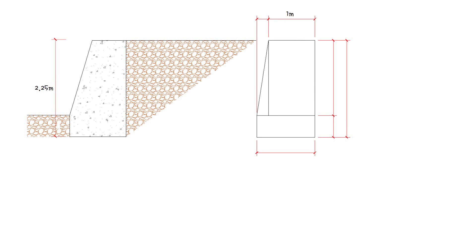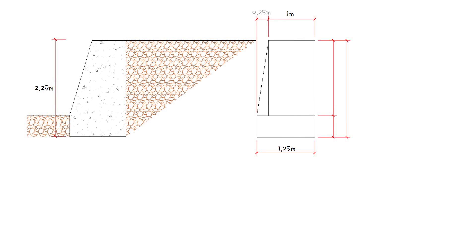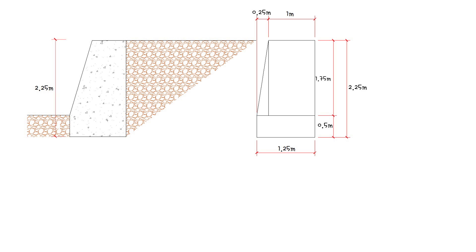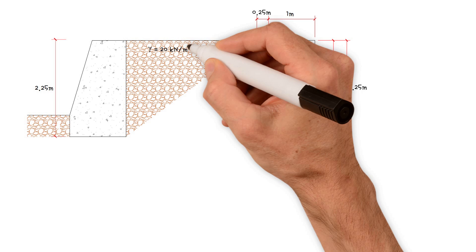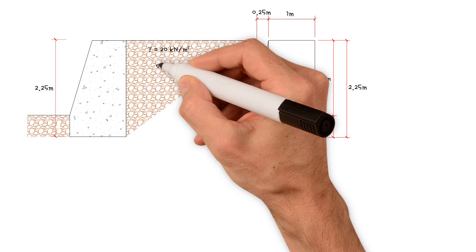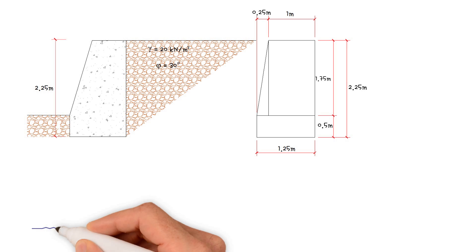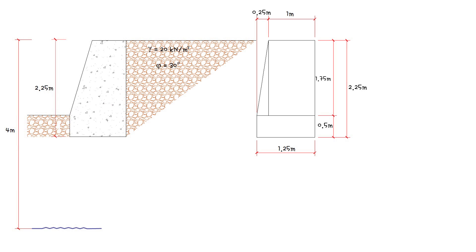We will start with a well-drained mass concrete retaining wall, 2.25 meters high, 1 meter wide at the top, and 1.25 meters wide at the base. The soil is sand and gravel with a density of 20 kilonewtons per cubic meter and an angle of friction of 30 degrees. The water table is 4 meters below the top of the retained surface. The weight of the concrete is 24 kilonewtons per cubic meter.